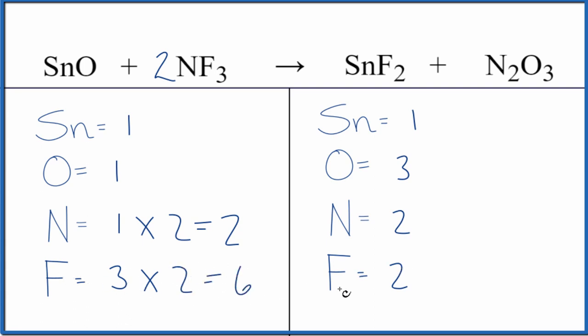So now I can look at this and say, well, if I have 6 here and 2 here, let's put a 3 here. 1 times 3 will give us 3 tin atoms there, and then 2 times 3 for the fluorines, that gives us 6 of those.